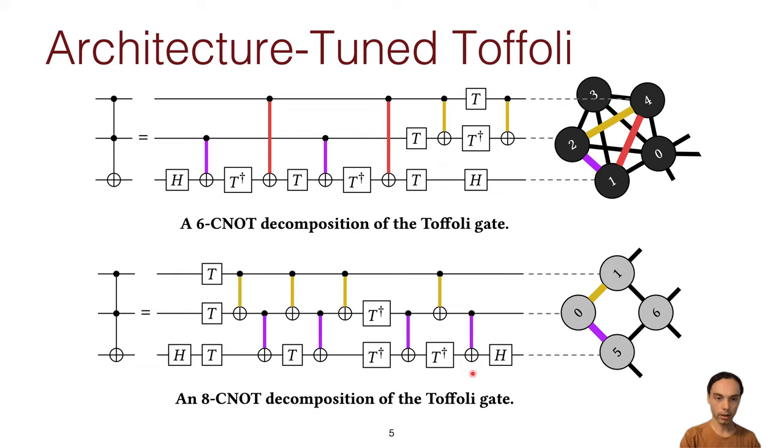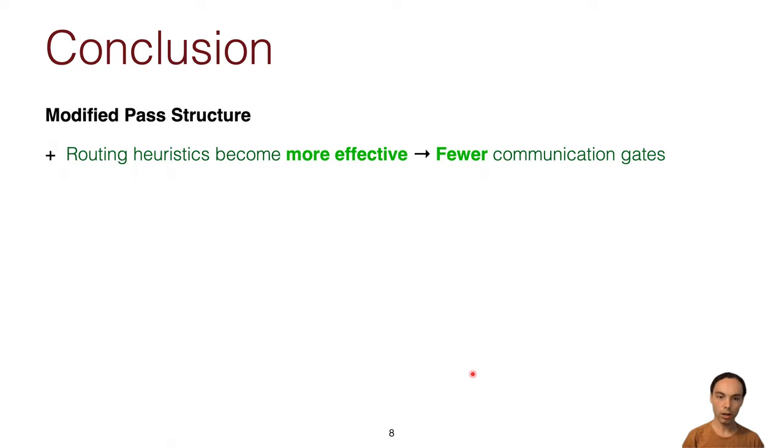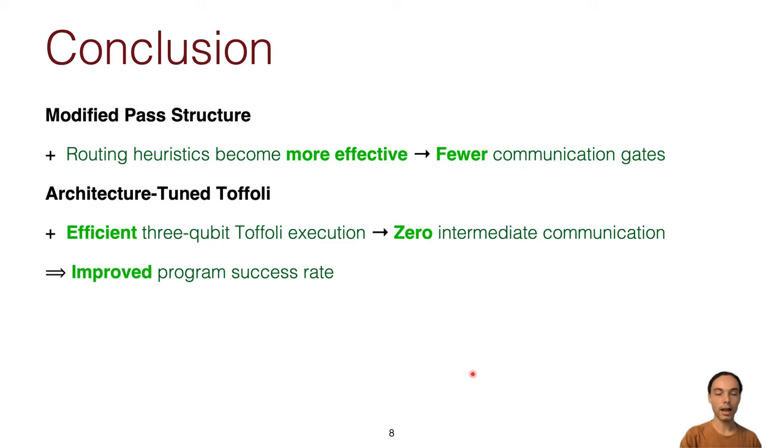So in conclusion, we modified the pass structure by splitting the decompose step into two pieces, and this allows routing heuristics to be more effective. And then the second piece now has information from the routing pass, since it's afterwards, and can now give you better decompositions with zero intermediate communication swaps. And all of these together improve program success rate.